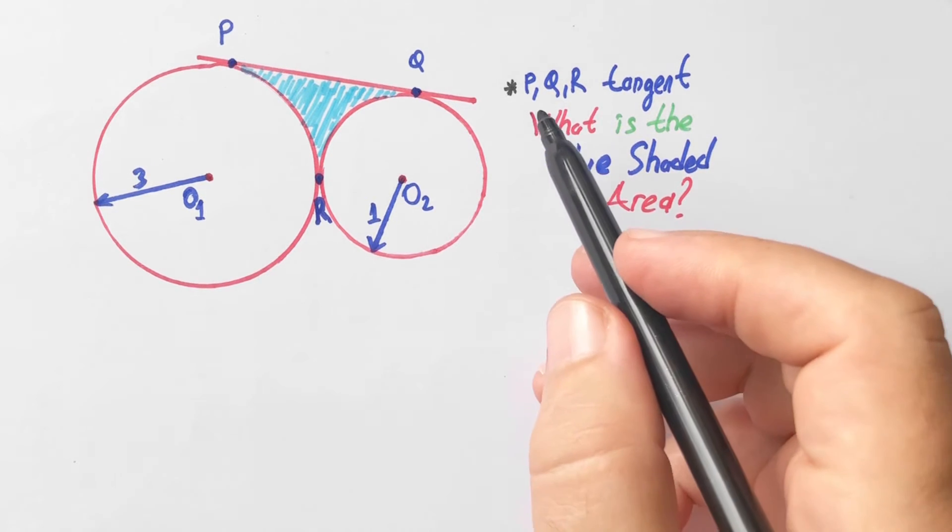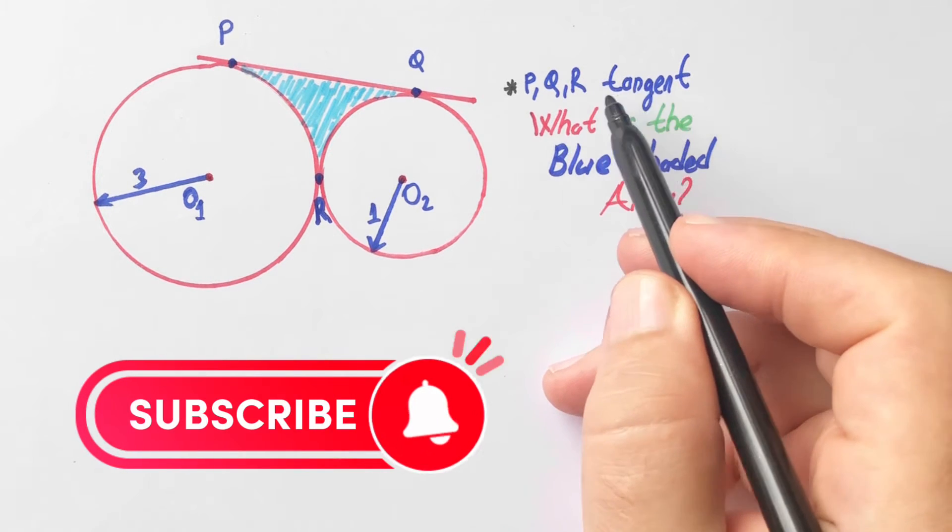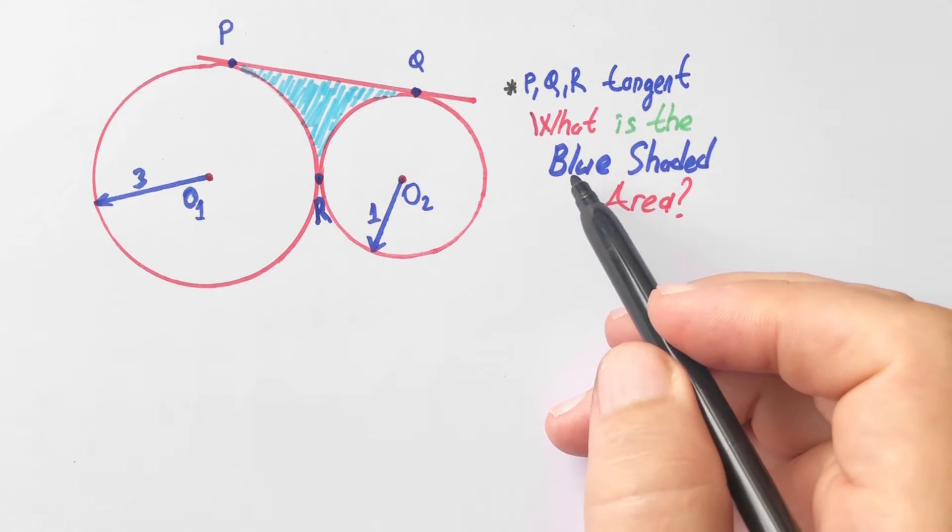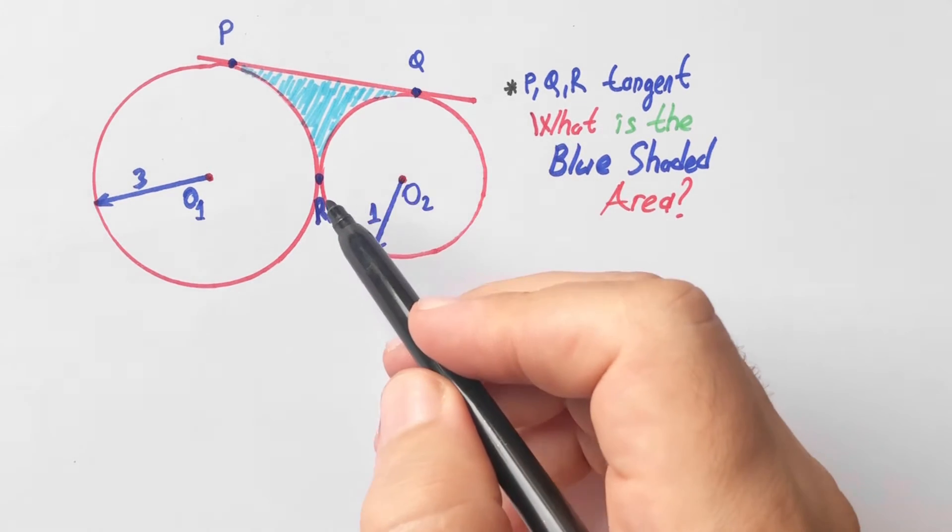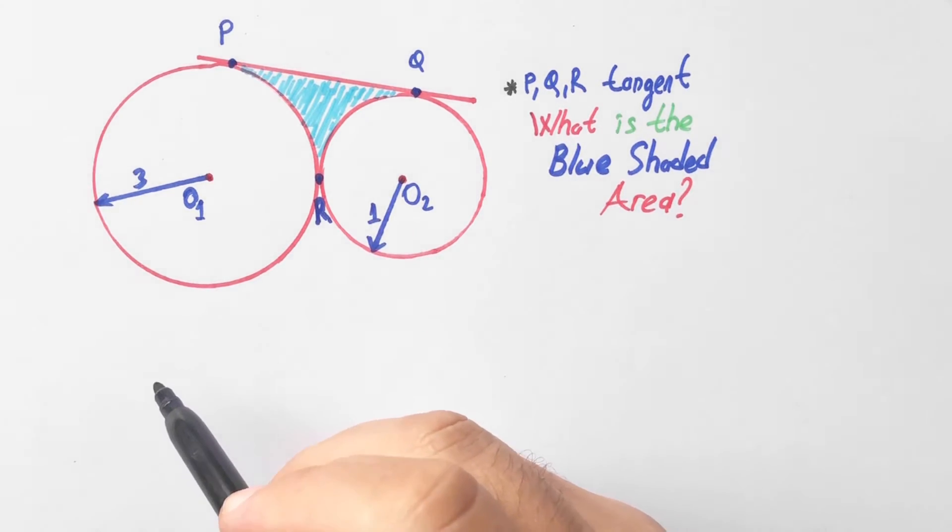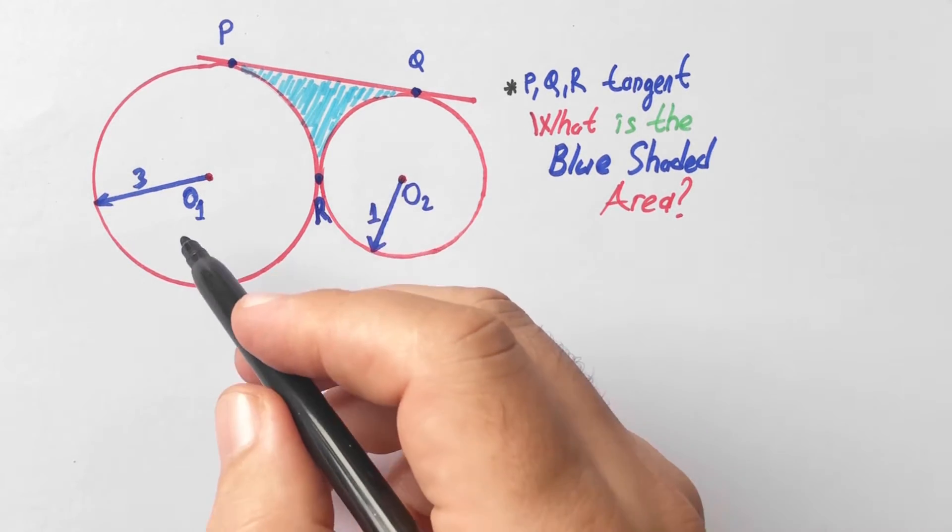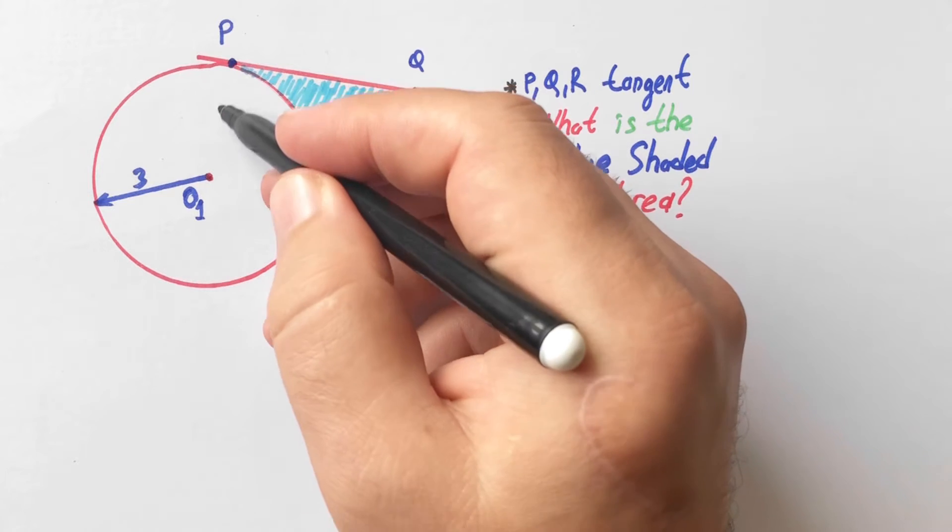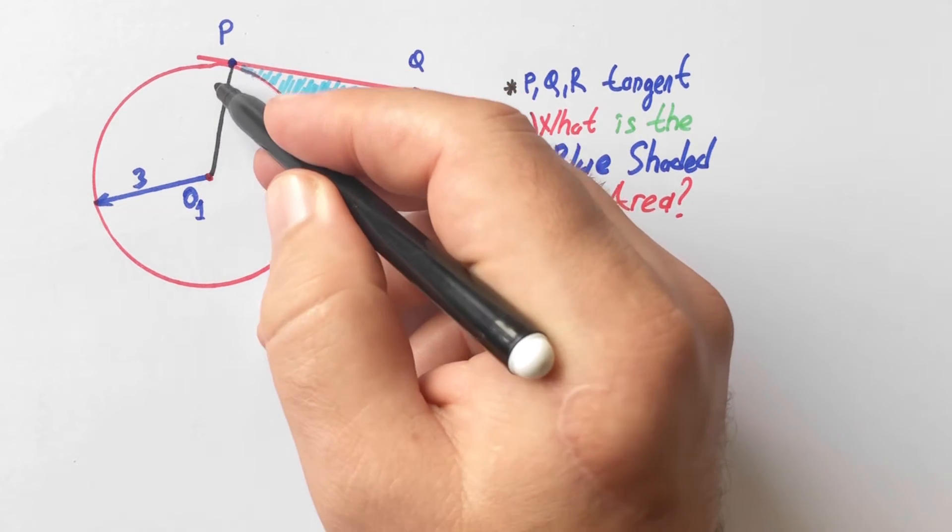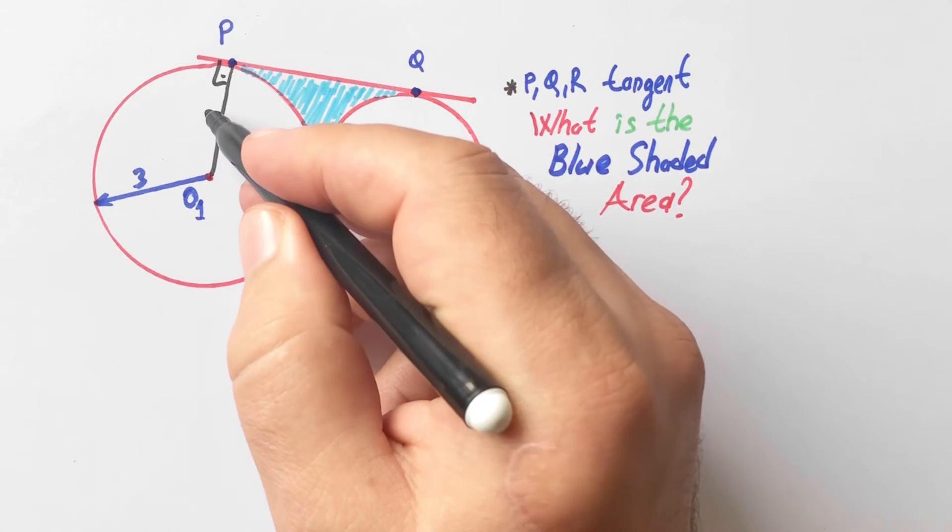Hello everyone. P, Q, R are tangent points, so P, Q, R are tangent points. The radius here is three. What is the blue shaded area? First step, if we draw a perpendicular line, let's draw here.